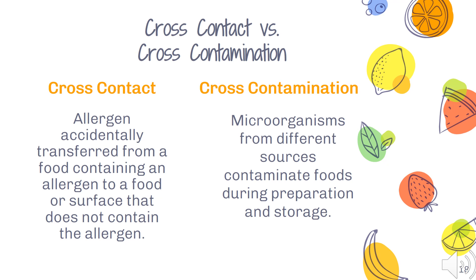Cross-contact and cross-contamination are two terms that are often used when it comes to allergens and food safety, and there are key differences between the two. Cross-contact refers to allergens — it's when an allergen is accidentally transferred from a food containing an allergen to a food or surface that does not. For example, if someone makes peanut butter sandwiches on a cutting board and then uses that same cutting board to chop vegetables without washing it, that would be cross-contact. Cross-contamination, by contrast, refers not to allergens but to microorganisms from different sources contaminating foods during preparation and storage.